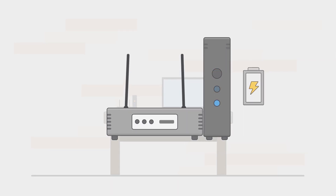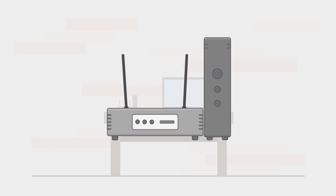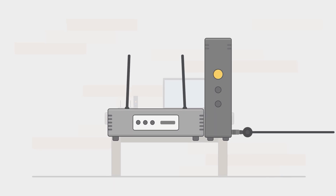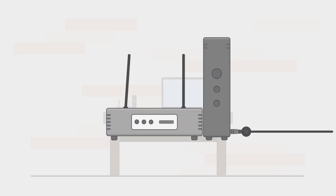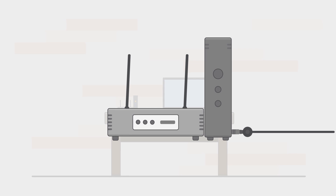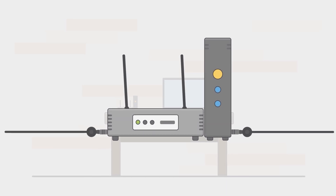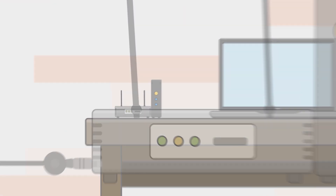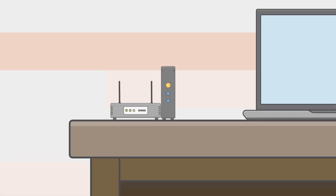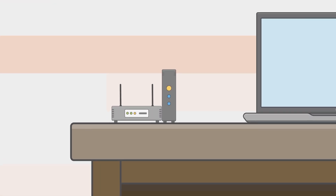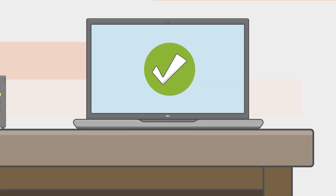Wait at least 30 seconds, then reinsert the battery if you removed it, and plug the modem back in. The lights on the modem should start blinking, so wait for them to stop blinking, then plug your router back in and wait a few minutes. When both the modem and the router are fully powered on, as indicated by their status lights, try to connect again.